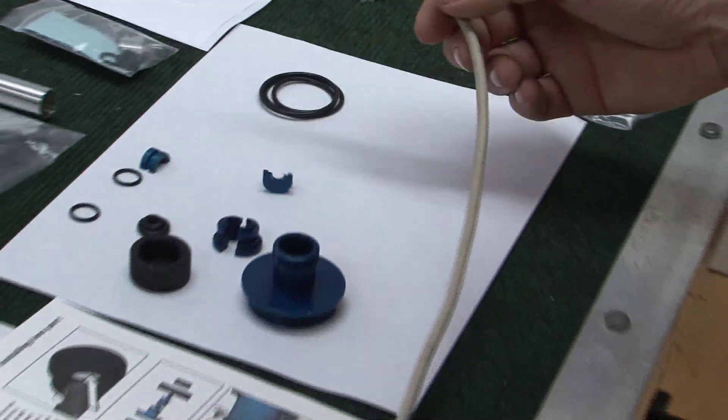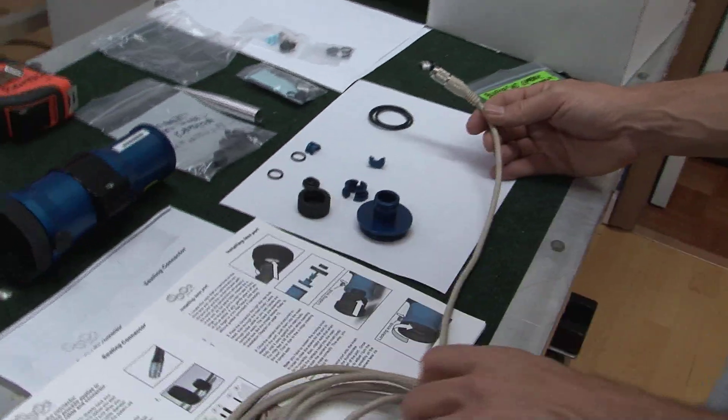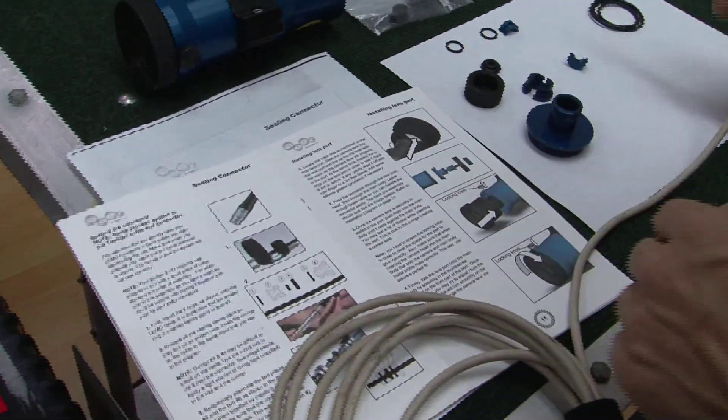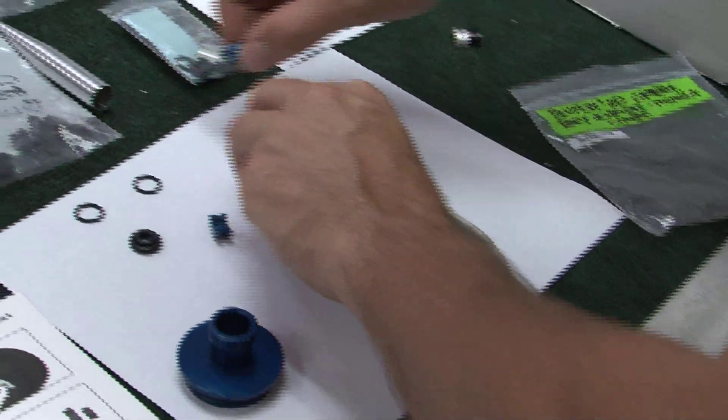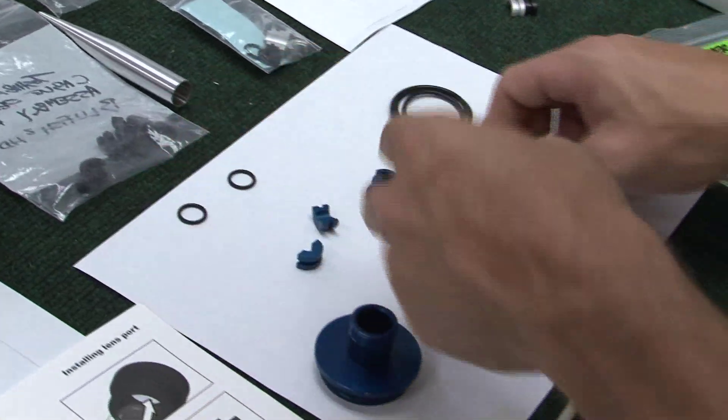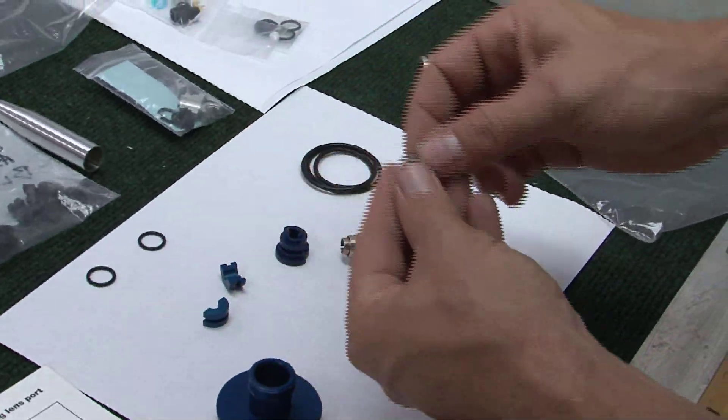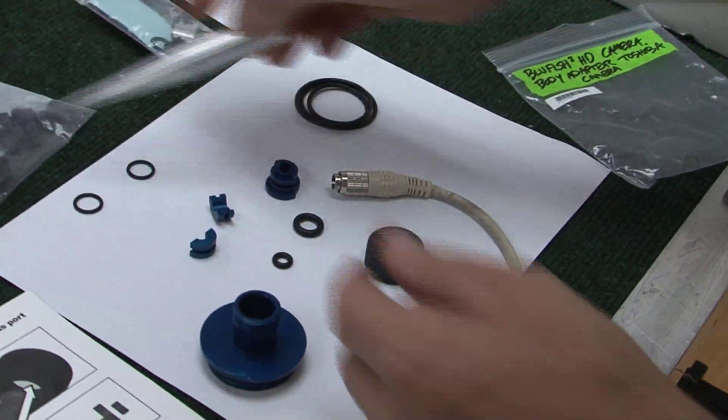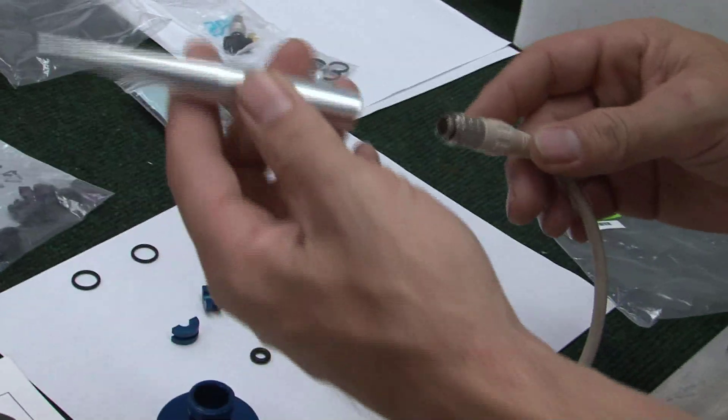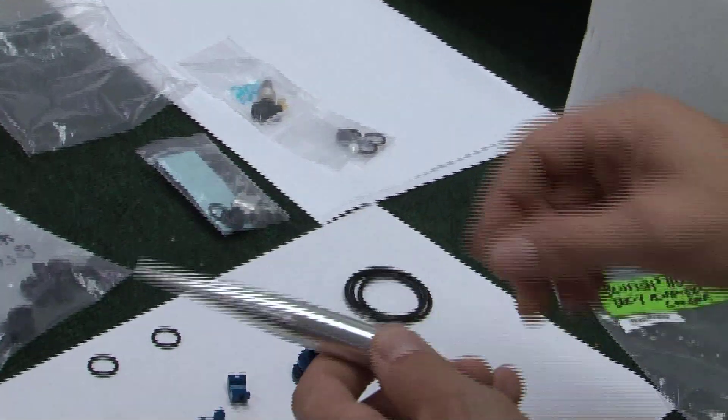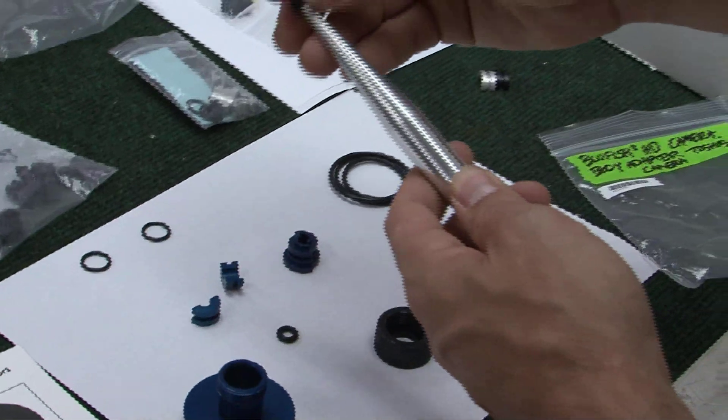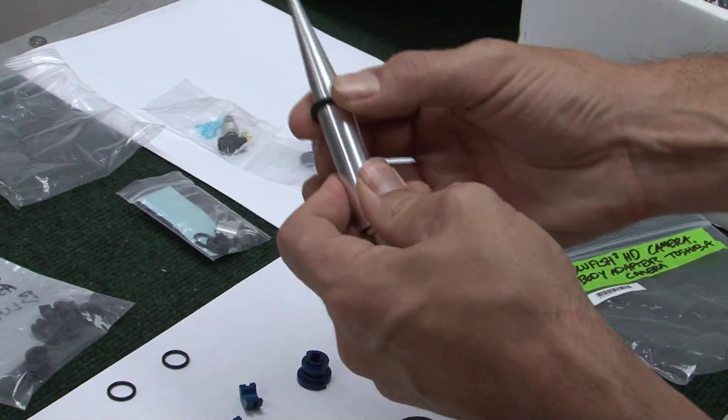Now, with the instructions and assistance from the pictures from the booklet, we will be inserting these fittings in this order. I found it to be easiest to insert the two middle washers first. We'll be using the cone shape to go over the cable end and we'll be inserting the first O-ring.